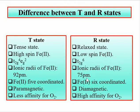In the R state, the ionic radius of Fe2+ is 75 picometers, and the iron is present in the plane of the porphyrin ring. Due to no unpaired electrons, it is diamagnetic in nature, while the T state is paramagnetic due to the presence of unpaired electrons.